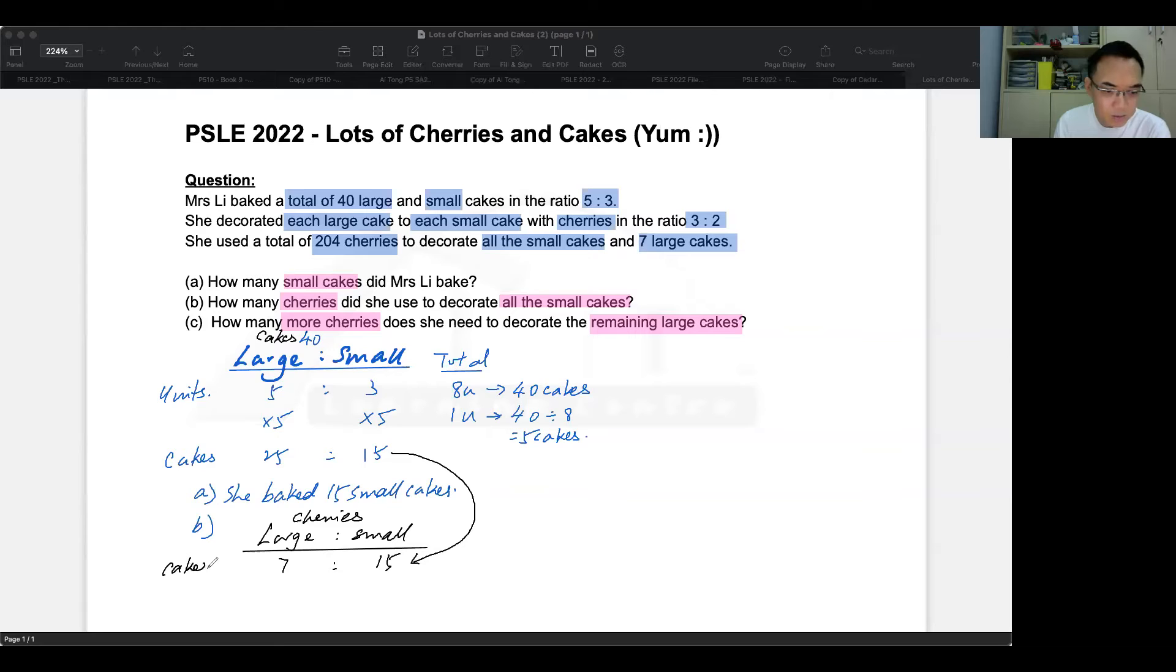Then they gave you another ratio, which is that the ratio of the cherries on each large to each small cake for the cherries is three to two. So now what we're going to have to do is we're going to have to multiply this by three and two respectively. When you multiply this by three and two, you are getting the parts, 21 parts to 30 parts. It is a good idea to not repeat the word. Otherwise, it gets confusing between units and parts.